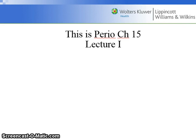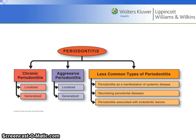Hello students, this is Perio Chapter 15, Lecture 1. There are three major categories of periodontitis. The 1999 AAP classification of periodontal diseases and conditions subdivides periodontitis into three major categories. Each of the three major categories has two or more subcategories. See page 254, figure 15.1 for more information.